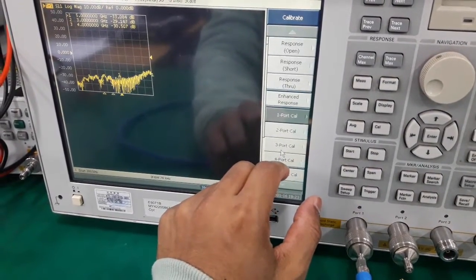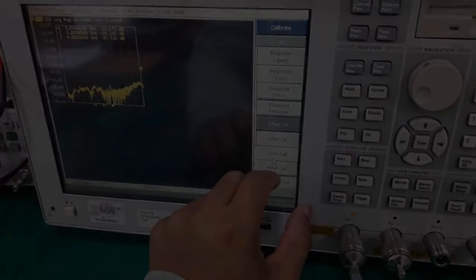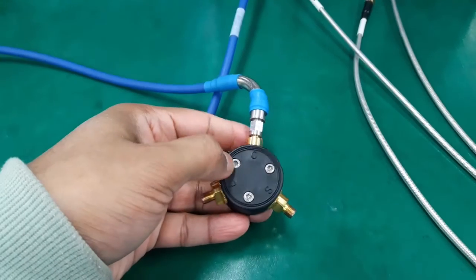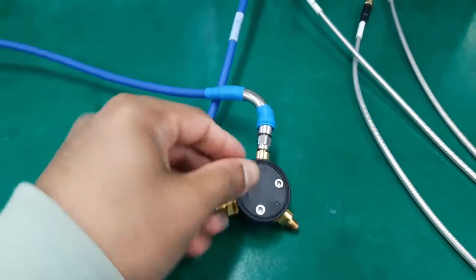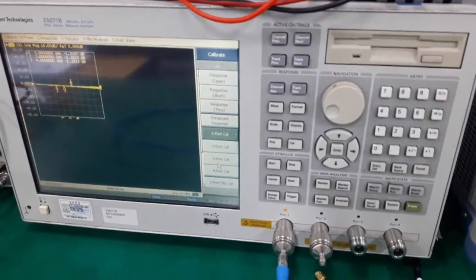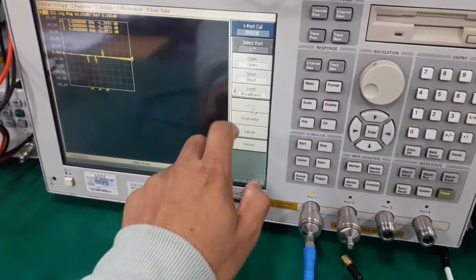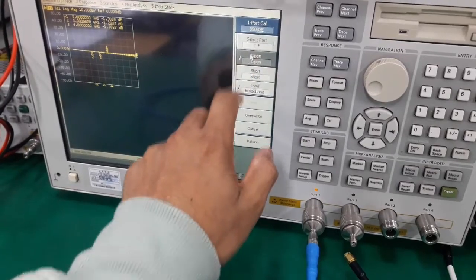Okay. Now we will do the same procedure for the rest of the two. At this time, the old terminal, the open terminal is connected to port 1. Now repeat the same procedure. So check marks again.